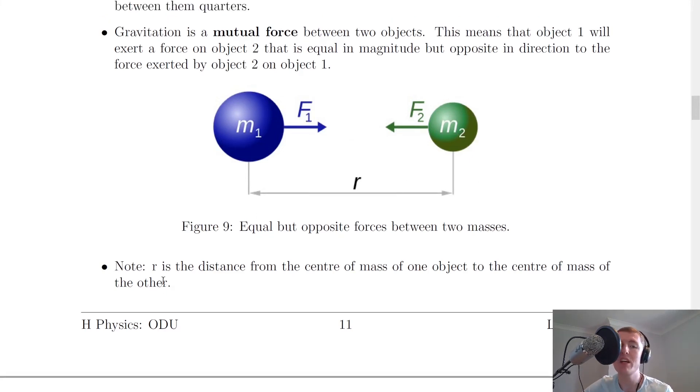The last important thing is to note that r is the distance from the centre of mass of one object to the centre of mass of the other. So that's going from this point to this point. Therefore, you need to take that into account when you're stating your values of distance when doing questions relating to this topic.